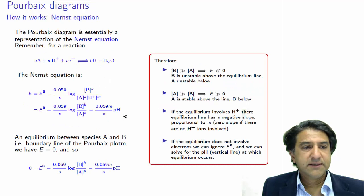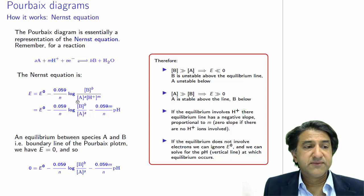This is how the voltage changes as a function of pH. But it also changes as a function of the concentration of the species here. Okay, so that's the Nernst equation, and you can see sloping lines appearing.